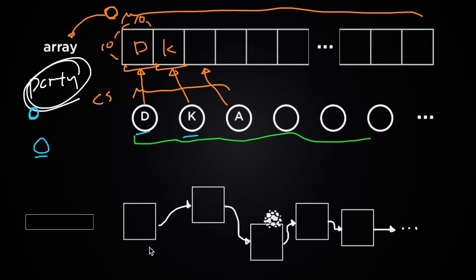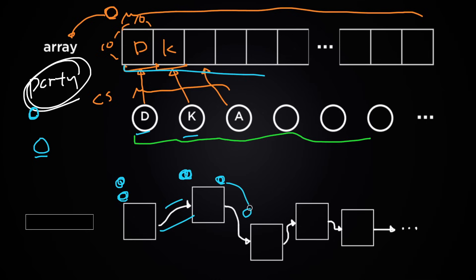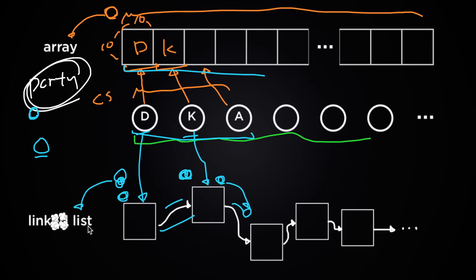Here's another idea: instead of a long box with many partitions, get individual boxes connected with strings. The first box is connected to the second with a string, which is connected to the third, and so on. Just like before, put participants' tokens in these boxes one by one in order. This sort of data structure realized in real life corresponds to the linked list data structure in computer science.